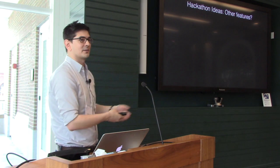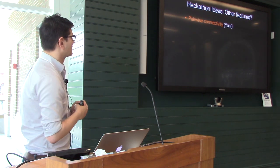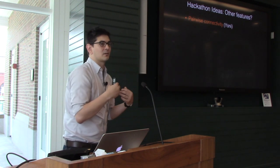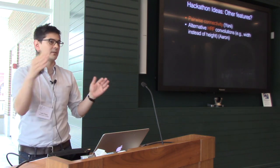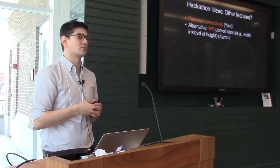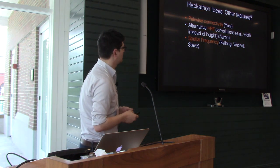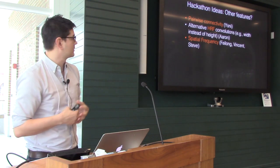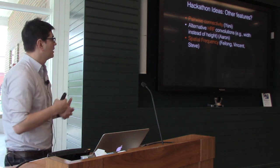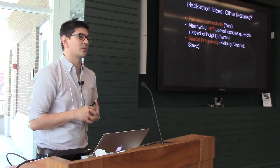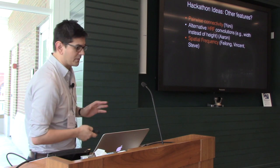Here are some hackathon ideas people are working on: Yoni has been working on pairwise connectivity — training a model to predict from correlations between regions rather than mean activation. Aaron was working on whether the duration or how long an emotion response is sustained gives additional independent information — I think that's a really cool idea. Another idea I'm excited about, that Faylong and Vincent and Steve expressed interest in, is looking at the spatial frequency of how information is encoded in the brain. I think fine-grained sensory representations are high spatial frequency, while emotion is lower spatial frequency and more distributed — which may also be why I can get such good accuracy without hyper-alignment.